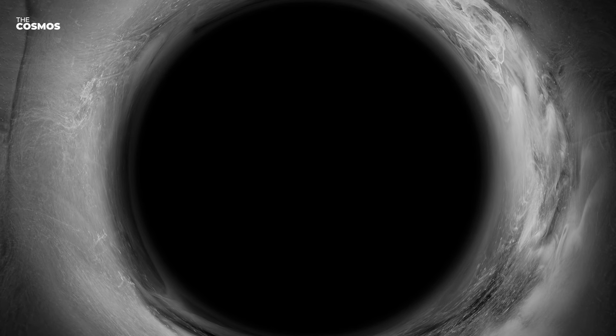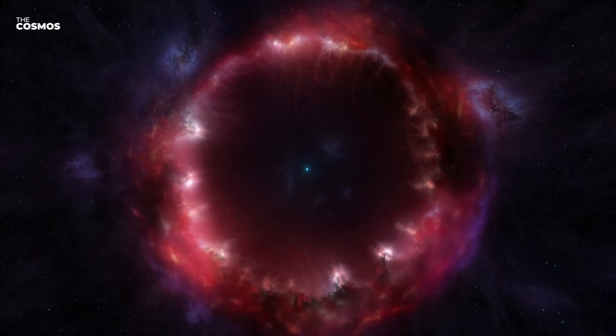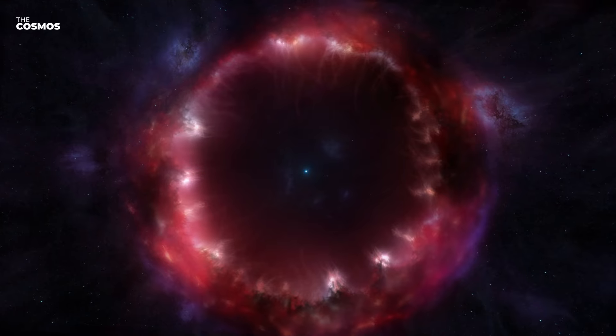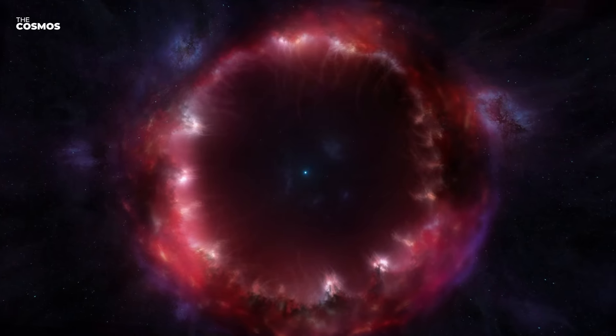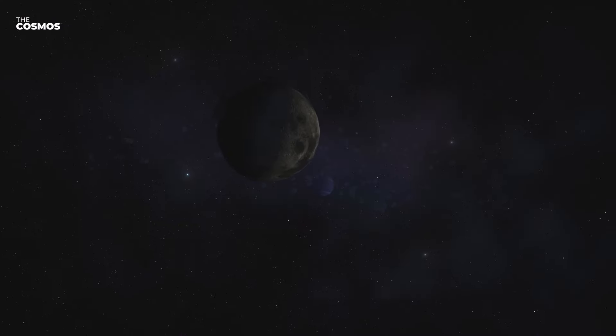The destruction progresses to even smaller scales. Planetary systems, including our own solar system, can't withstand the growing force. Planets get torn away from their stars, casting them into the cold darkness of space. The night sky on any remaining planets would transform as familiar constellations vanish and stars disappear.